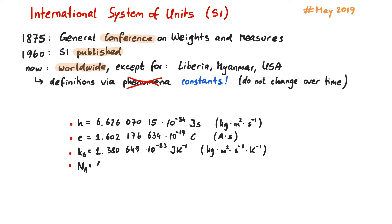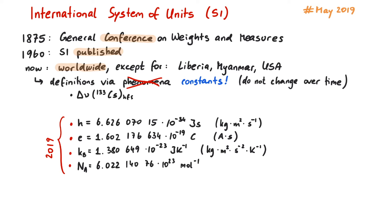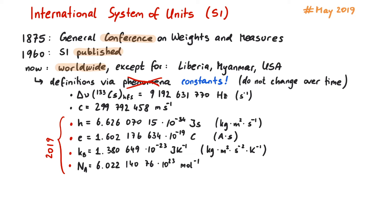And finally, Avogadro's constant is exactly 6.02214076 times 10 to the 23 inverse moles. The transition frequency between the two hyperfine levels of the ground state of the cesium-133 atom is exactly 9,192,631,770 Hz, or inverse seconds. The speed of light is exactly 299,792,458 meters per second. And the luminous efficacy of monochromatic radiation of a frequency of 540 terahertz is exactly 683 lumens per watt.